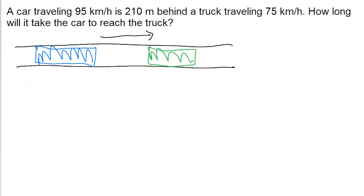Some people might look at this problem and think they just need to use the velocity formula to figure out how long it takes for an object at 95 kilometers per hour to travel 210 meters. But the problem with that is that as the car is traveling, the truck is moving as well. So the distance the car needs to travel to reach the truck is not just 210 meters — it's 210 meters plus however far the truck travels during that time frame.